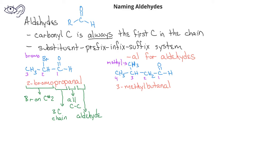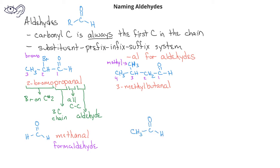There are a few compounds that have common names for aldehydes. For example, the one-carbon aldehyde methanal is more commonly known as formaldehyde. The two-carbon aldehyde ethanal is more commonly known as acetaldehyde.